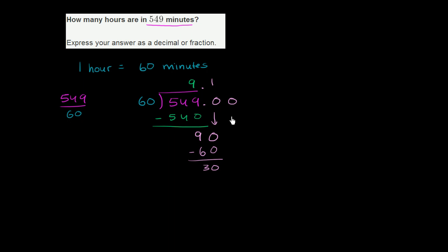Let's bring down another zero. And so we get to 300. 60 goes into 300 five times. 5 times 60 is 300. Subtract. And we are done.